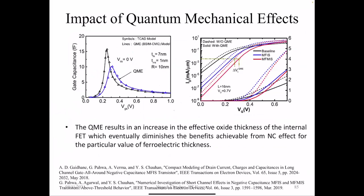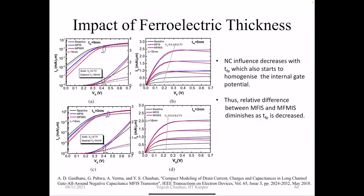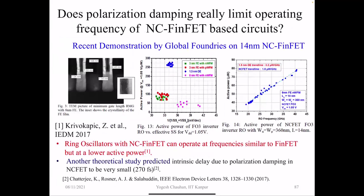Looking at ferroelectric thickness impact: for 5 nm versus 3 nm, MFIS gives better results compared to MFMIS, but MFMIS shows larger NDR effect due to simultaneous switching of dipoles. Global Foundries demonstrated negative capacitance FinFET in their 40 nm technology and also showed working ring oscillators up to 40 GHz. This demonstrates this is not just a theoretical study — it's a very promising technology.